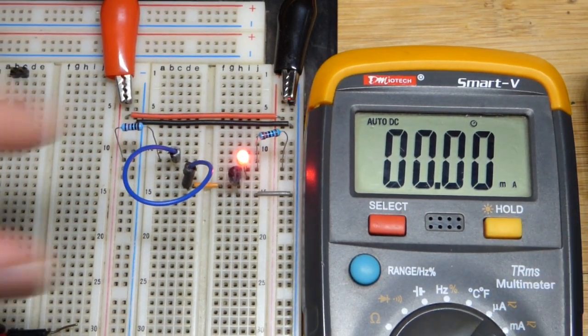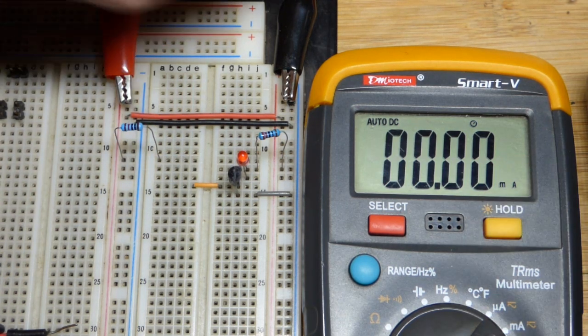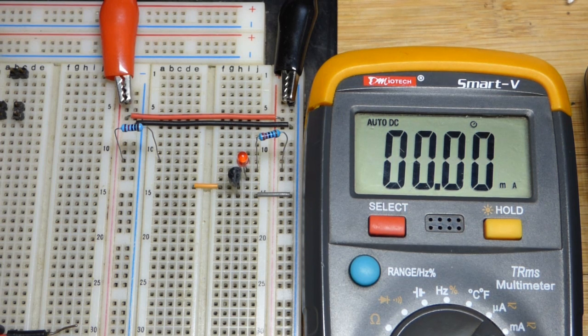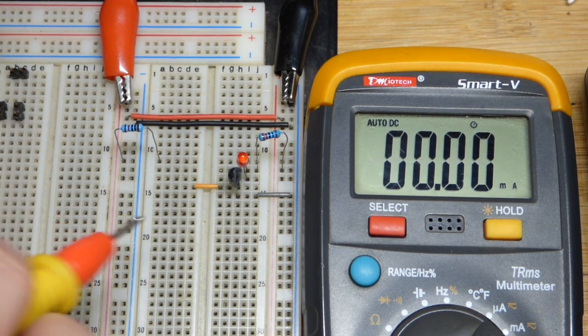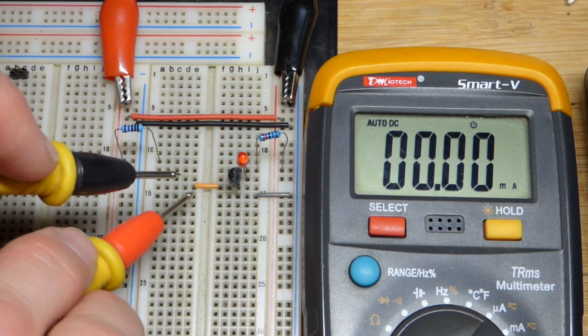It should be less than about half of a milliamp. So we'd actually want to go into the microamp range. But you always want to set the meter to a higher current than you expect to measure.